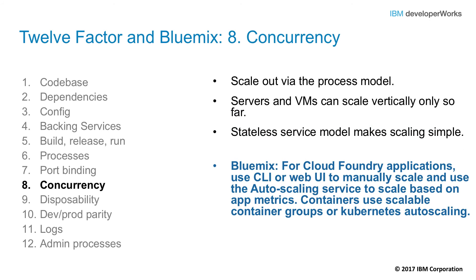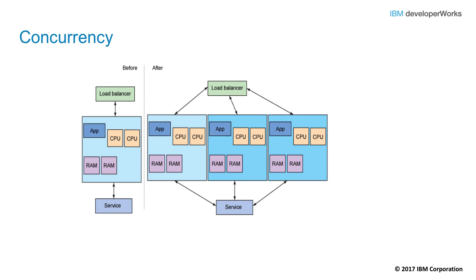Factor number eight: concurrency. This factor is about scaling out via the process model. A 12-factor app is designed to be composed of one or more stateless processes. When a process or instance reaches the resource capacity of the container, the application scales by adding another instance — horizontal scaling. The microservices architectural style takes this a step further by splitting up a monolithic application into components of different functions, allowing independent horizontal scaling of a particular component. Bluemix makes this kind of horizontal scaling natural, with traffic routing automatically adjusted on scale out and scale in.